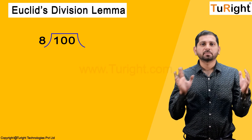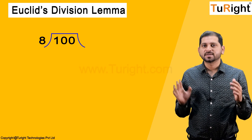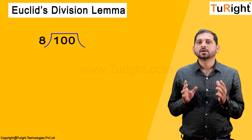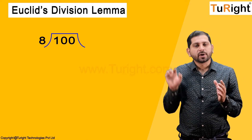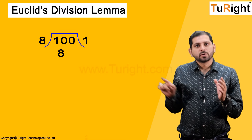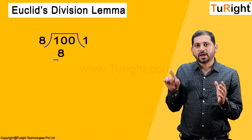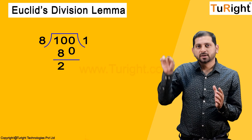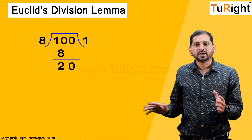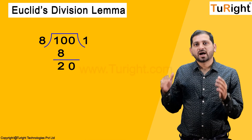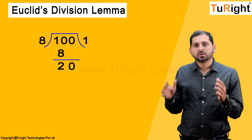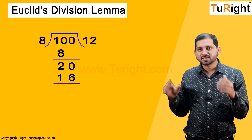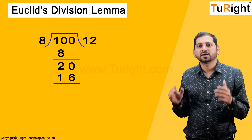Let us consider one more example: 100 divided by 8, where 8 is the divisor and 100 is the dividend. We consider two digits of 100, that's 10. 8 ones are 8, and 10 minus 8 gives 2. Bringing down the 0 gives us 20. Dividing 20 by 8: 8 twos are 16, and 20 minus 16 gives a remainder of 4.